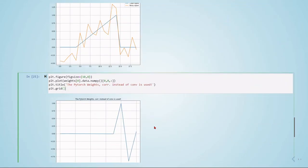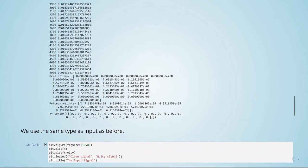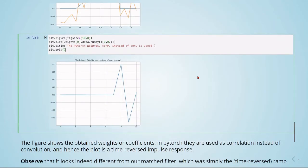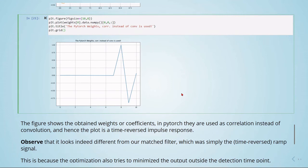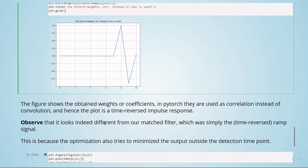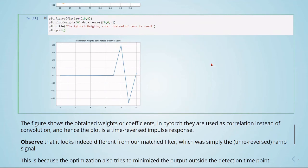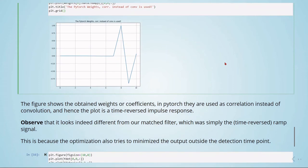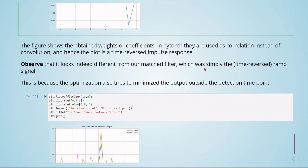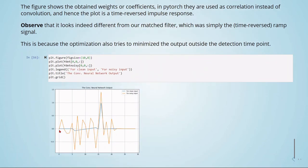So this is the weights PyTorch calculates after training. We see that we obtain these coefficients. So this is a time-reversed impulse response. And we see it's a different impulse response than the matched filter. Also because this optimization is trying to minimize the output outside the detection point. We didn't have this in the matched filter.